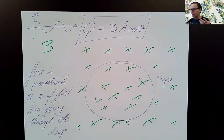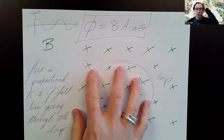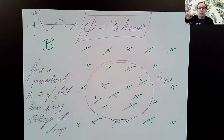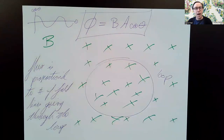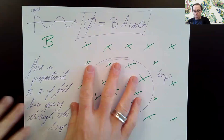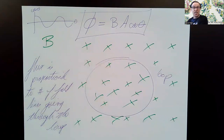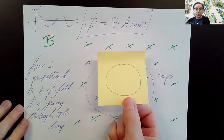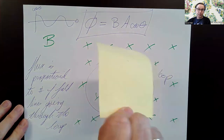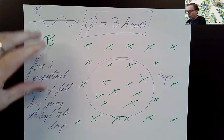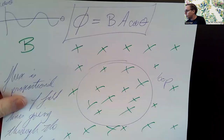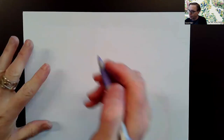Of course, there are other ways of changing flux. What if I had a magnetic field controlled by some dial that I could turn, so I could increase and decrease the magnetic field strength? But a more common way of doing it is to have a constant magnetic field and a loop that you rotate. So flux is BA cosine theta.